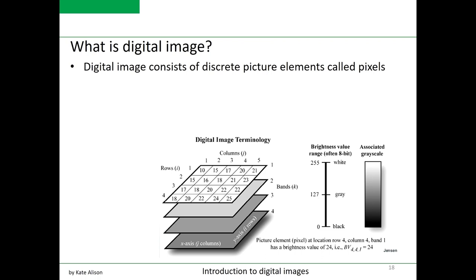Whether an image is acquired electronically or photographically, it may contain data from a single spectral band or from multiple spectral bands. The image shown in the slide has four bands.